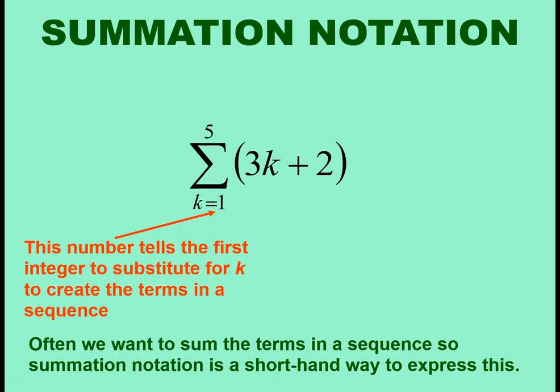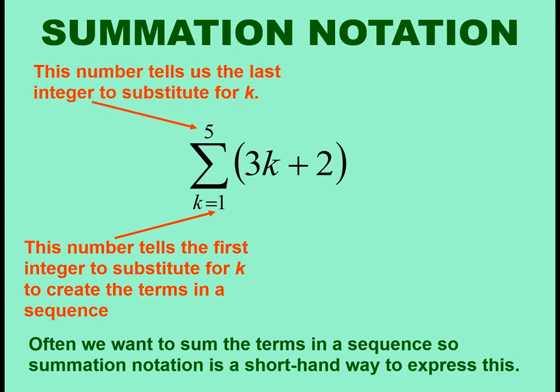This number tells the first integer to substitute for k to create the terms in a sequence, and the number on top of the symbol tells us the last integer to substitute for k. This is the formula that generates the sequence.